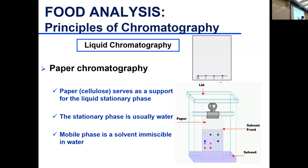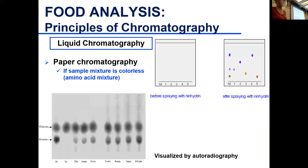Your constituents separate as the solvent moves. If they don't have color, you need to make them visible. For amino acids, spraying with ninhydrin causes a reaction that gives a specific color. For colorless compounds without a specific reagent, you can sometimes visualize them by autoradiography.